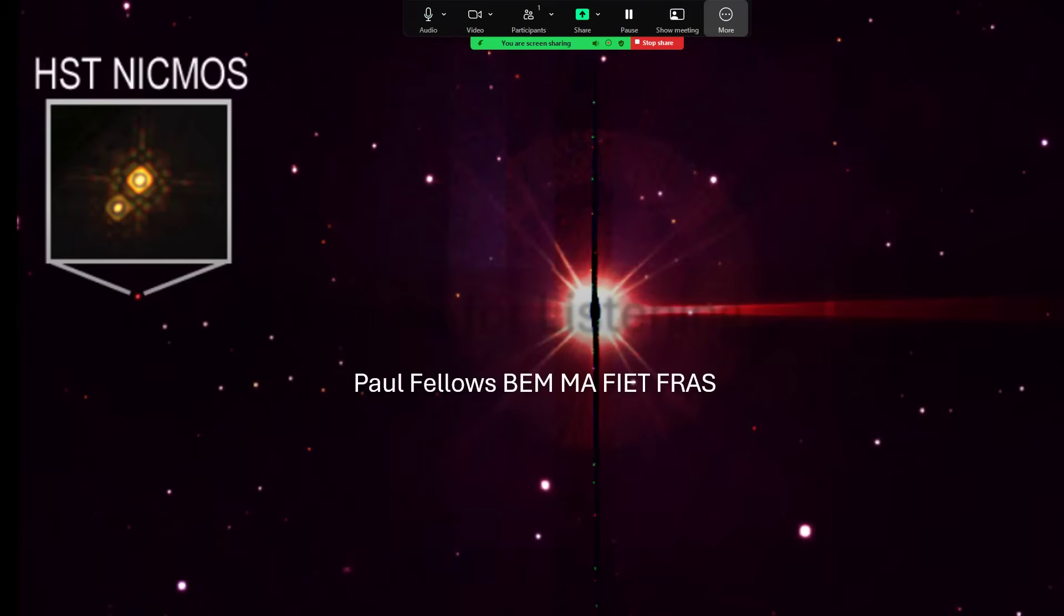I will leave you with the HST NICMOS picture, which I think is fantastic, showing this pair of brown dwarfs that are really close to the sun in terms of the overall galactic structure, so right in our backyard. And that's once around Epsilon Indi.